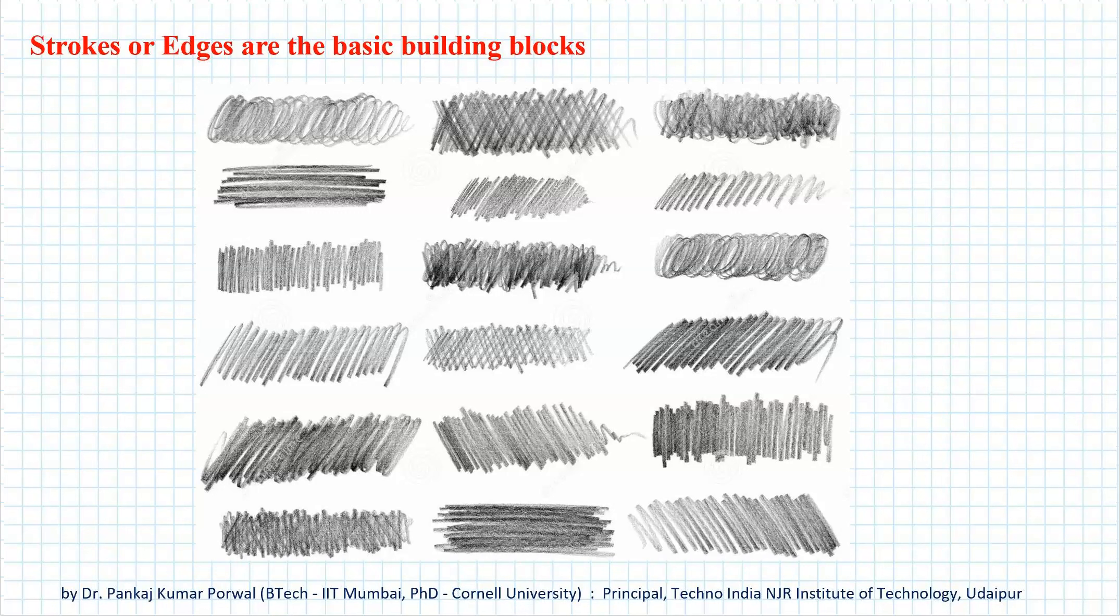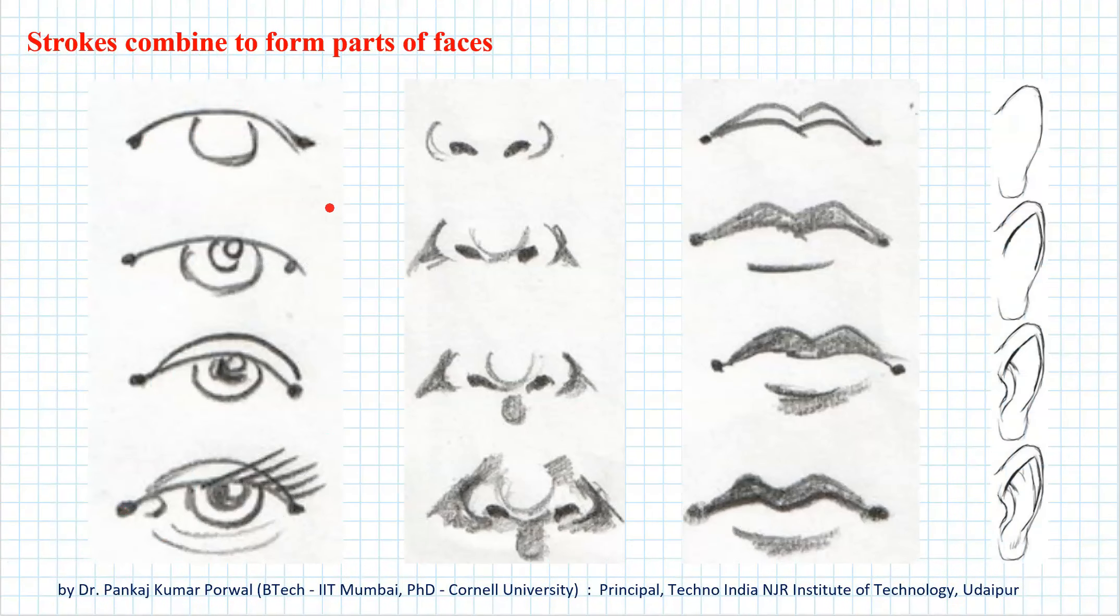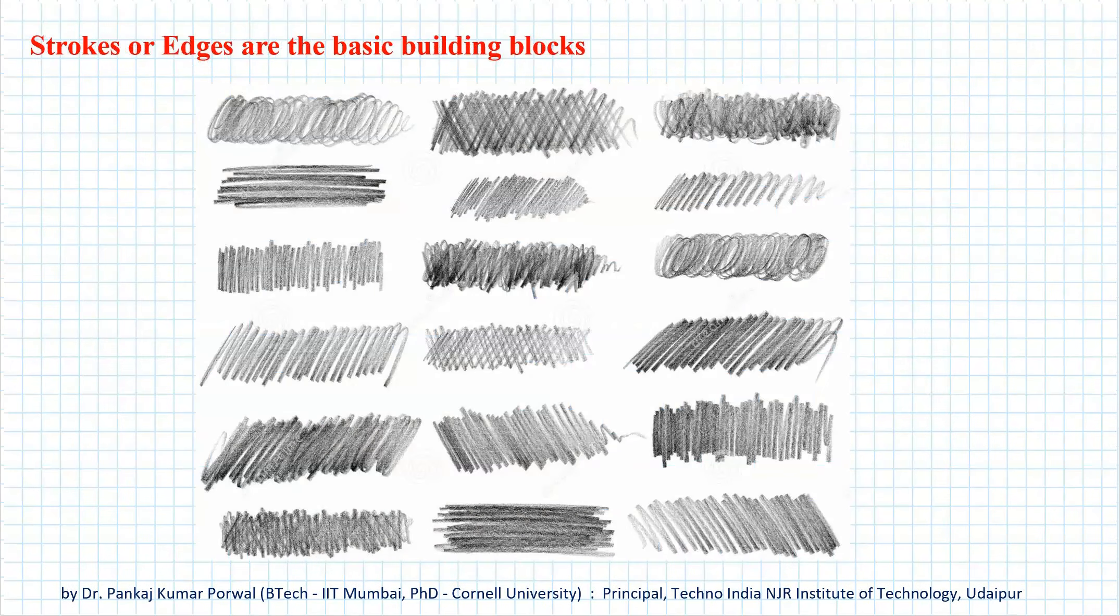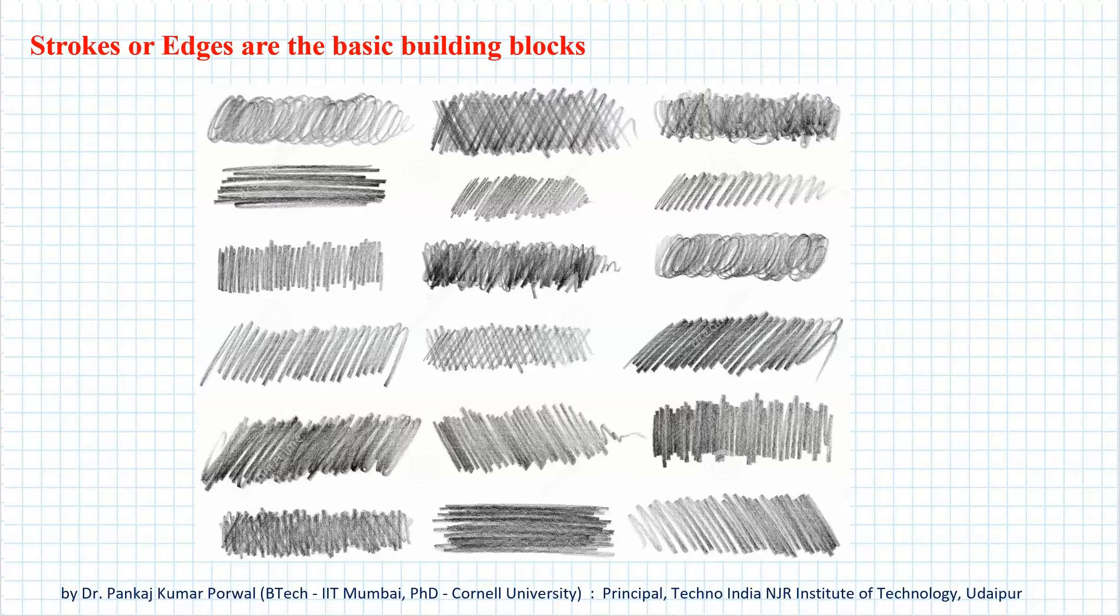Several strokes can be combined to form parts of the face like eyes, nose, lips, and ears. These parts combine to form full face of a person. Using the same simple strokes, billions of distinct faces can be constructed.